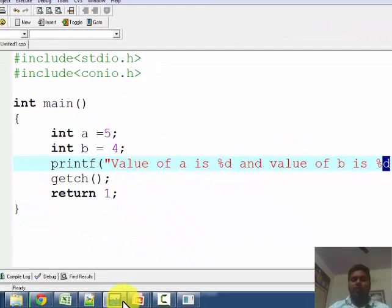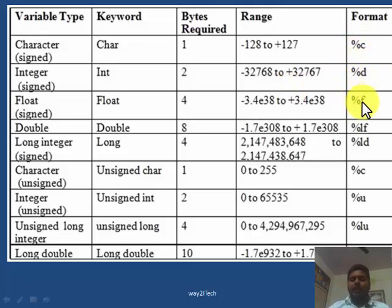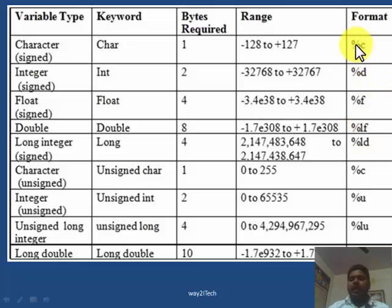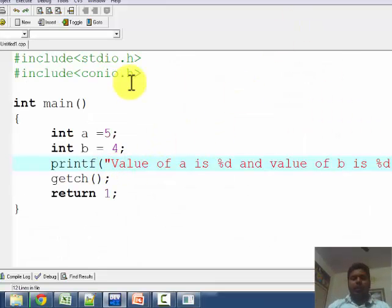So %d is known as a format specifier. We have many format specifiers: %c for char, %d for int, and %f for float. These are the important format specifiers you need to learn: %c for char, %d for int, and %f for float.